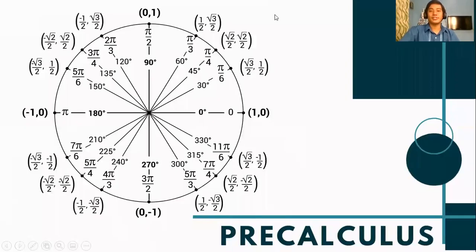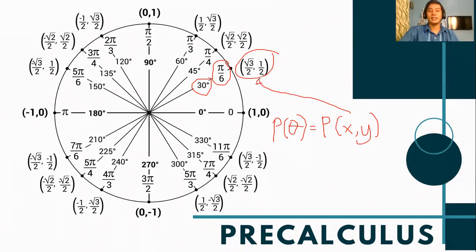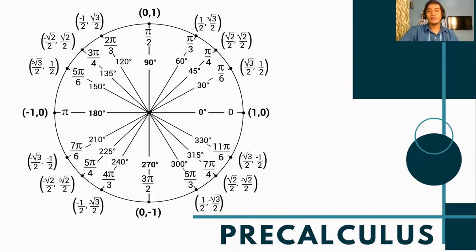Let's have a review about the unit circle. Recall that every measure of the angle in degree measure has a corresponding radian measure. And every measure of this angle has a corresponding trigonometric point. So in statement, we say that the function P of theta has a corresponding P with coordinates x and y. And this is referred to as the trigonometric point represented by these values. So it only means that for every function of theta, there is a corresponding function for the length of these sides.